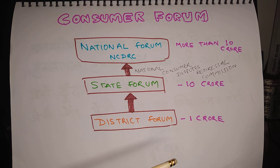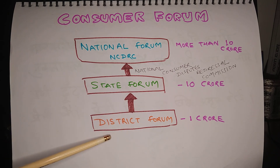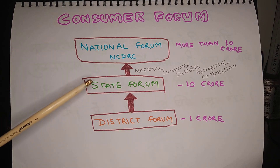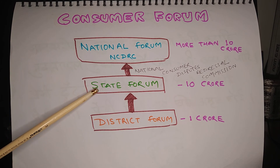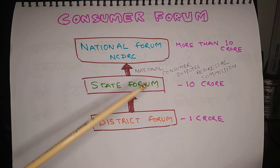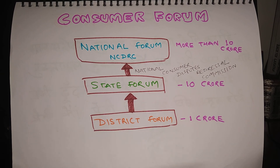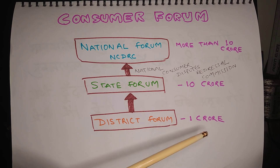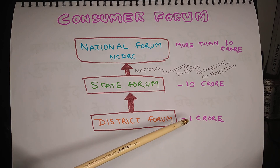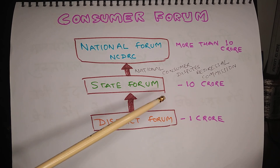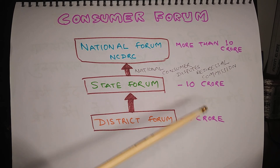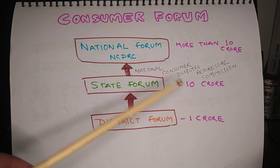If someone does not agree with the decision of the consumer forum, they can go to the proper judicial mechanism. The three tiers are: at the bottom, the District Forum or District Consumer Court; above that, the State Forum; and at the top, the National Forum — NCDRC, the National Consumer Disputes Redressal Commission. If the disputed amount is up to rupees one crore, a person can go to the District Forum (previously the limit was 20 lakh, recently raised to one crore). If the value is more than one crore and up to ten crore, the State Forum handles it; if more than ten crore, one must go to the National Forum.